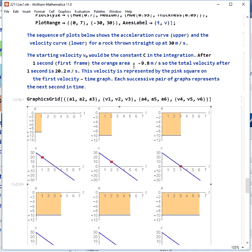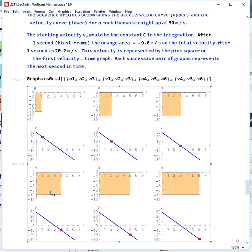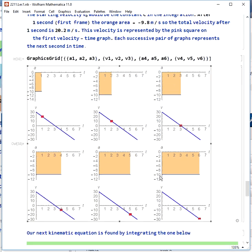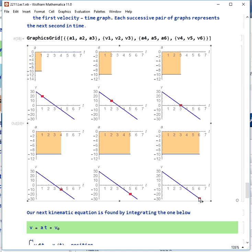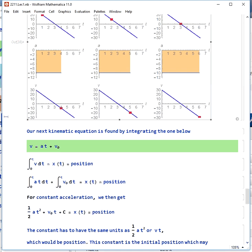At 1 second, we have an orange area, which is negative 9.8 meters per second squared times 1 second. Our velocity is then reduced from 30 by 9.8 meters per second. We can then go on to 2 seconds, 3 seconds, 4, 5, 6, and we see as this area increases and is negative, the v, which is the sum of that area, gets more negative as well.